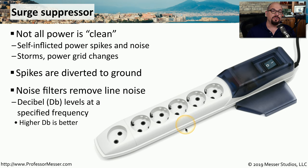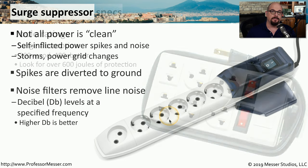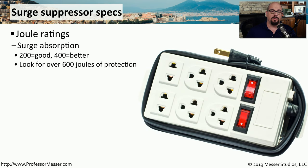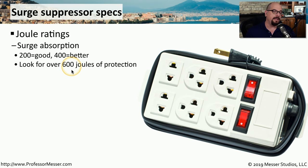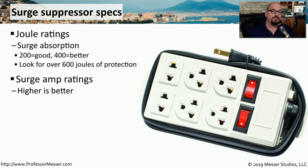Surge suppressors are also good at removing noise from the electrical line, and they're measured in decibels — the higher the decibel, the better the filtering. The amount of surge that can be absorbed by a surge protector is measured in joules. The larger the joule number, the larger the surge suppression. If you want a good surge suppressor, you're usually looking for one that has over 600 joules of protection. You also want one that can handle the amount of amperage being put through the unit — the higher the number, the better.